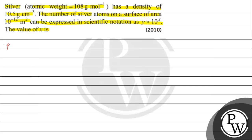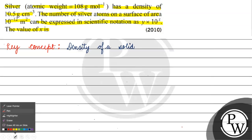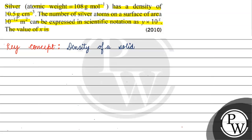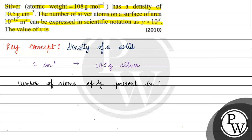The key concept for this question is the density of a solid. If we talk about density of a solid, we have 1 centimeter cube containing 10.5 gram of silver. Now, if we look at the number of atoms of silver present in 1 centimeter cube, we have 10.5 gram.